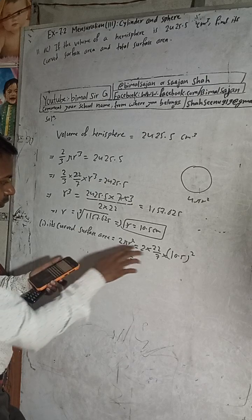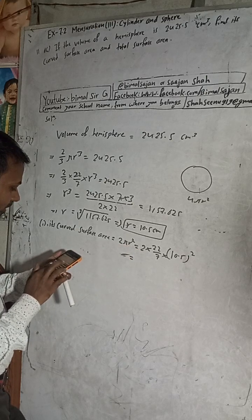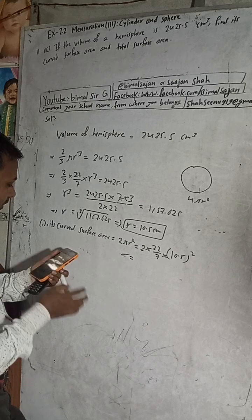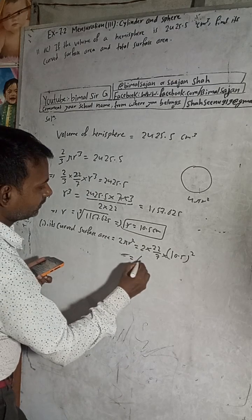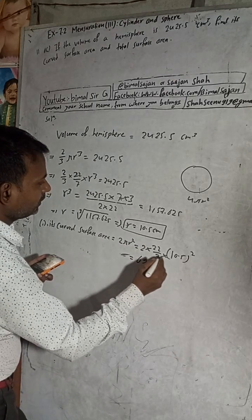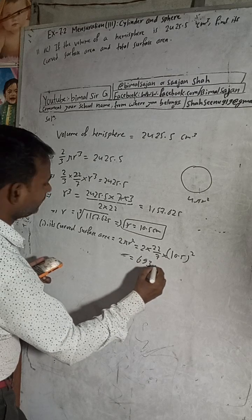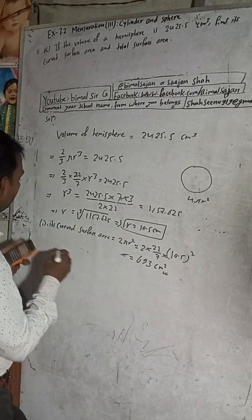This gives us 44 times 10.5 squared divided by 7, which equals 693 cm². This is our curved surface area.